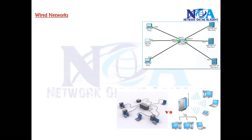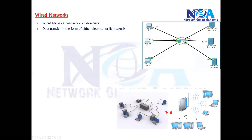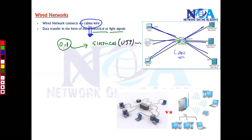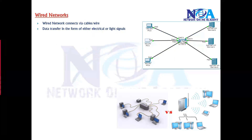Let's start with wired networks. From basic CCNA studies, you're probably aware of these concepts where we connect devices with the help of wires. In a simple LAN, if you want to provide connectivity between computers, you use some kind of cable which acts as the transmission medium. Your data — zeros and ones — is converted into electrical signals or light signals depending on the cable type. UTP or copper cables carry electrical signals, while fiber cables carry light signals.